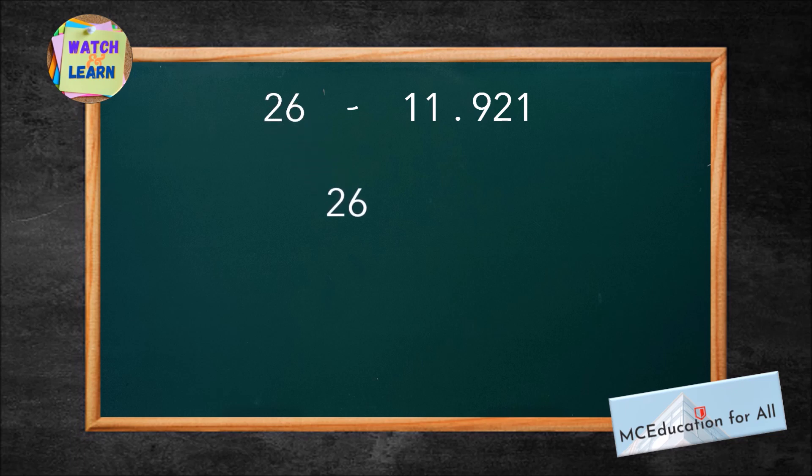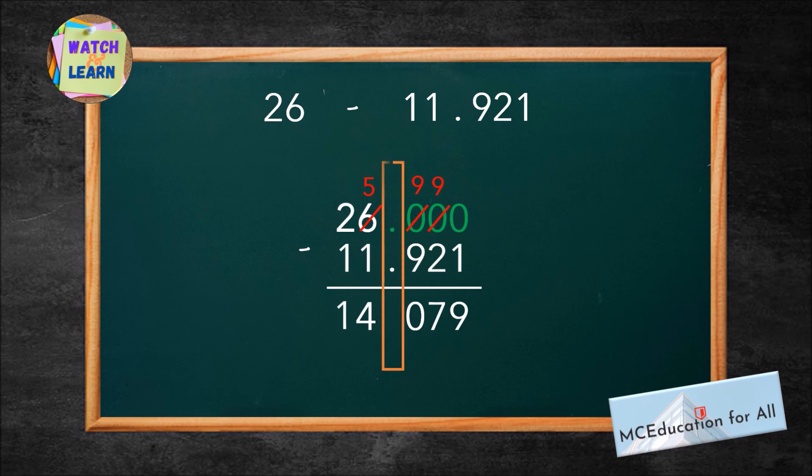For example, the whole number 26 was written in a decimal form as 26.000. Align them vertically then subtract. Therefore, the answer is 14.079.